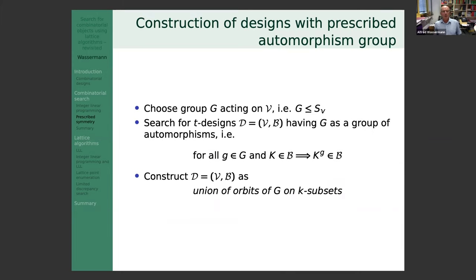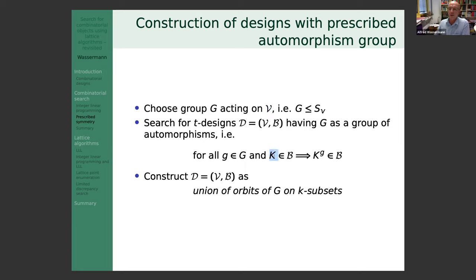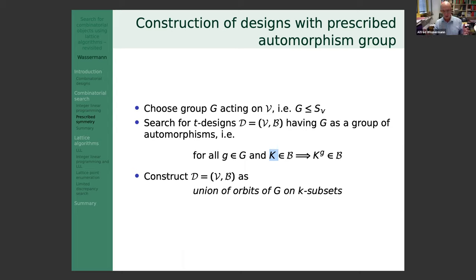We choose some group G acting on the set of points and search for t-designs having G as a group of automorphisms. This means if a block k is in the design, then its entire orbit under G is also in the design. So we search for orbits under the group action of G, and the design is a union of orbits.